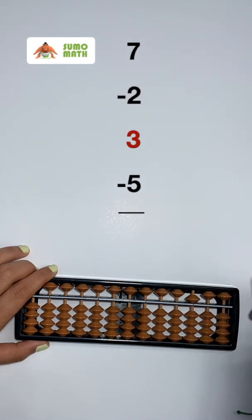Add 3 by moving 3 lower beads to the bar with your thumb. Finally, subtract 5 by moving the top 5 bead away from the bar with your index finger, leaving the final answer of 3 on the abacus.